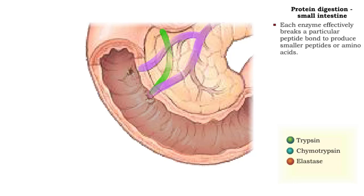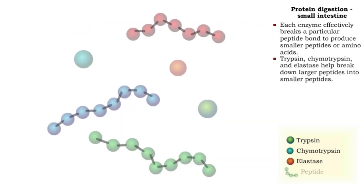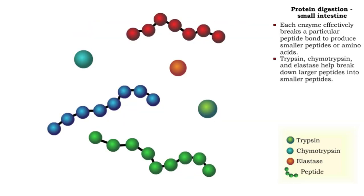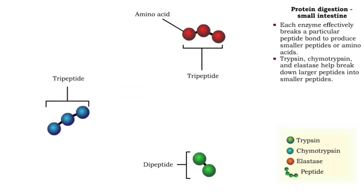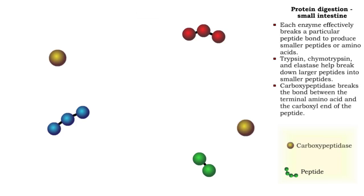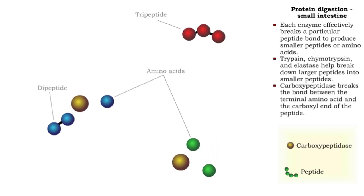Each enzyme effectively breaks a particular peptide bond to produce smaller peptides or amino acids. Trypsin, chymotrypsin, and elastase work to catalyze the breakdown of larger peptides into smaller ones. Carboxypeptidase breaks the peptide bond that attaches the terminal amino acid to the carboxyl end of the peptide.